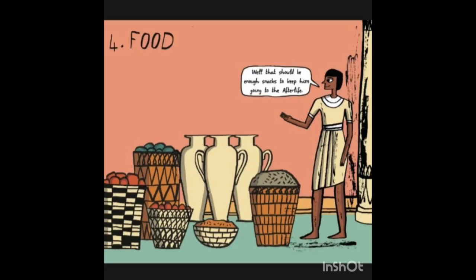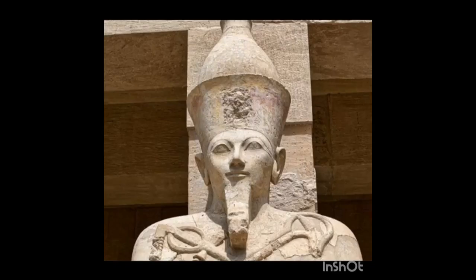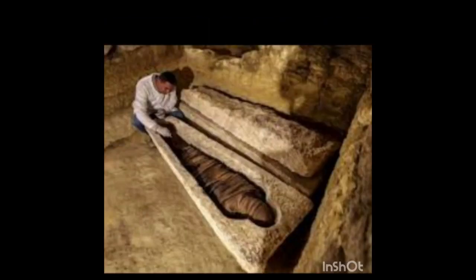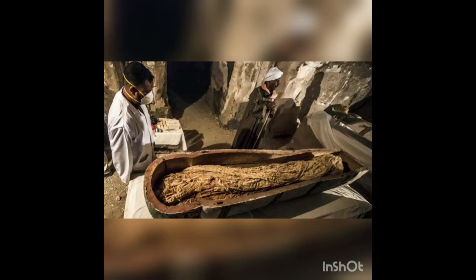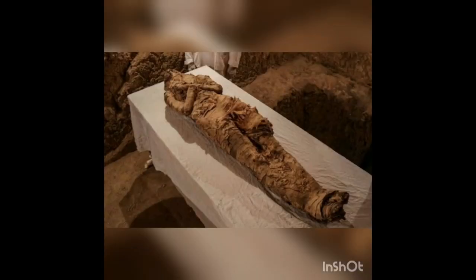Tutankhamun was the last of the ruling dynasty. He died very young — only nine years after he came to the throne. A British archaeologist named Howard Carter searched and investigated Tut's tomb in 1922. Tut is the short form of Tutankhamun. Carter discovered the mummy and took it out of the coffin for investigation.